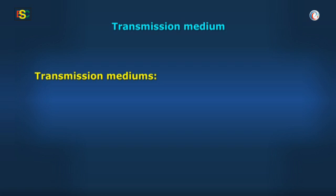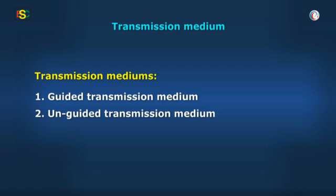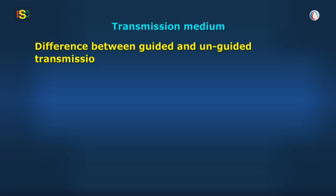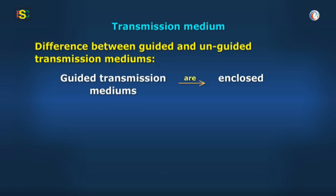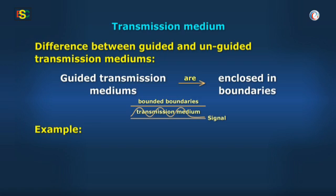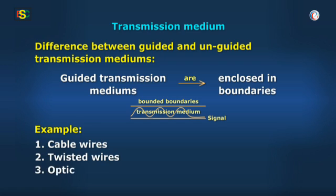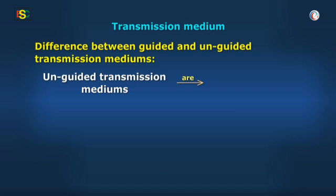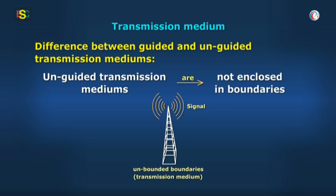Transmission mediums can be divided into two broad types. There is a simple difference between guided and unguided transmission mediums. Examples of guided media include cable wires, twisted wires, optic fibers, etc. Unguided transmission mediums are not enclosed in boundaries, and the message is free to travel in space. We will first talk about guided media with the help of examples.